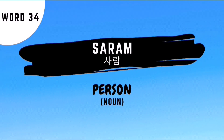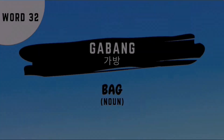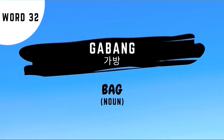Word number 34 is saram, which means person. Word number 33 is sillyeyo hamnida, which is used to say 'I'm sorry to disturb you' or 'excuse me.' And the last word for our review is word number 32, kabang, which means bag.